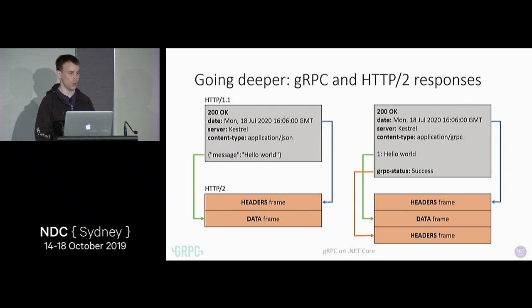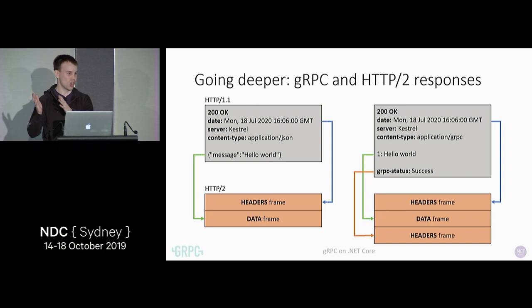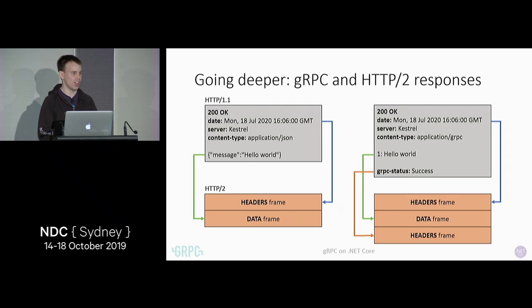You might ask why we need two status codes — we've already got 200 OK sent with the headers. We need it because of streaming. With streaming, we can send hello world in one data frame, wait a couple of seconds and do more processing, then send another reply in another data frame. That last header frame gives the overall status of our call — because the initial headers were sent to the client in the very first message, we need to send a status at the very end to say this overall streaming call succeeded.